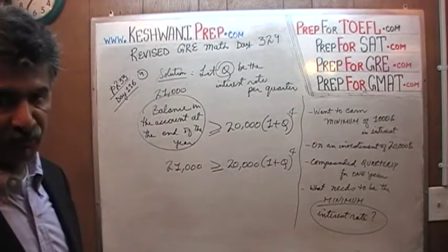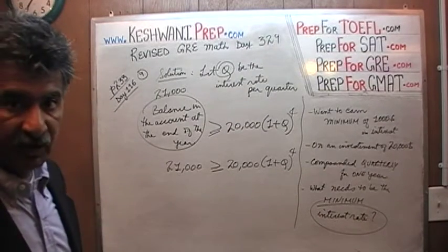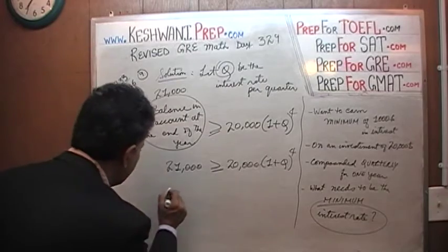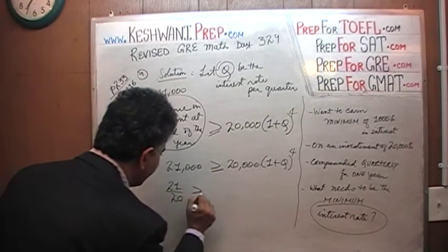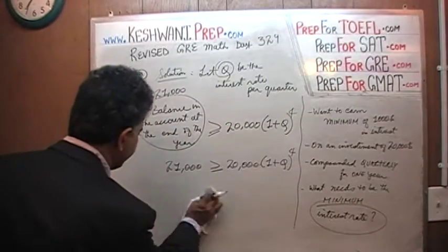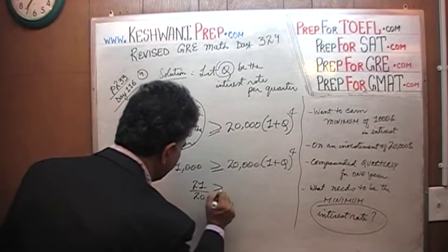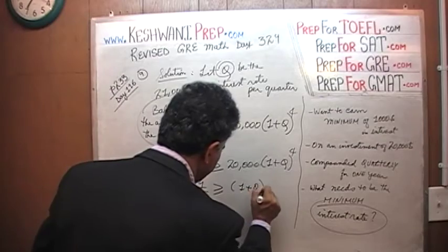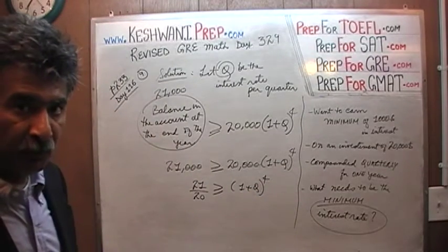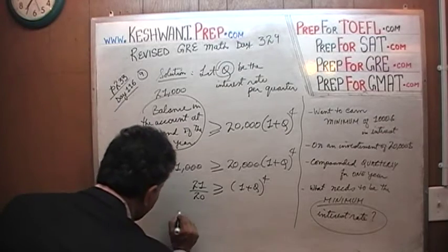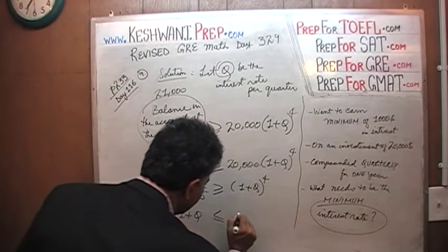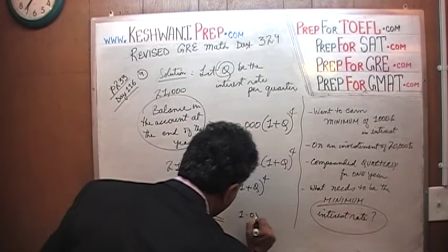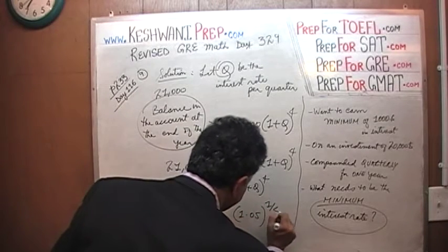The rest is straightforward. Let's divide both sides of the inequality by 1,000 — that gets rid of three zeros — and we end up with 21 over 20 is greater than or equal to (1 + Q) raised to 4. Now let's take the 4th root of both sides. 21 divided by 20 is 1.05, so (1 + Q) is less than or equal to the 4th root of 1.05.